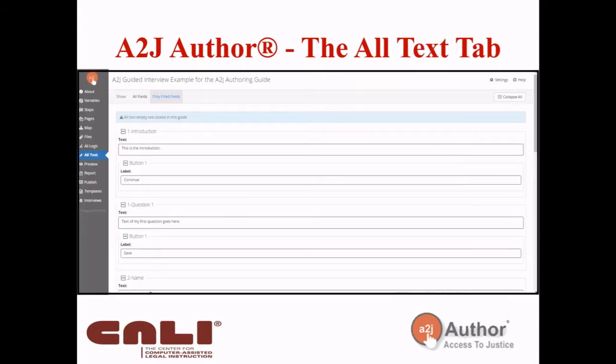The All Text tab is similar to the All Logic tab in that it shows you all the text in your interview. For example, if you're testing and find that you spelled 'judgment' wrong in 14 different places, it would be hugely annoying to fix in 14 separate questions. Here you can just change the text in one place.